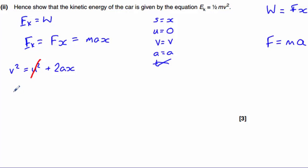Rearranging gives ax = v²/2. Substituting this into our equation, the kinetic energy EK = m(v²/2), or written as ½mv².